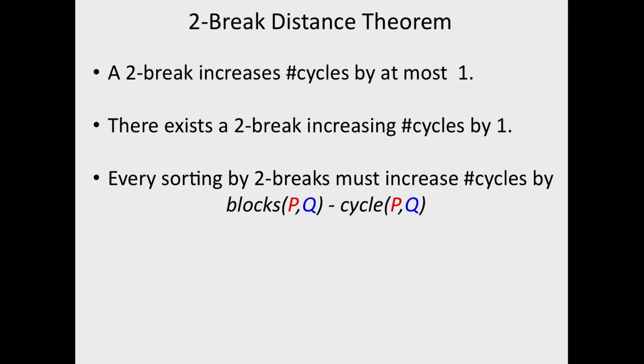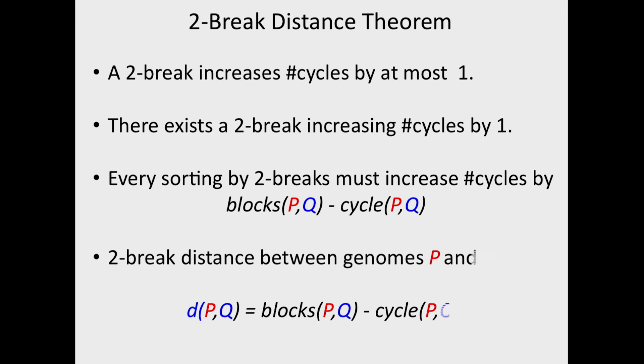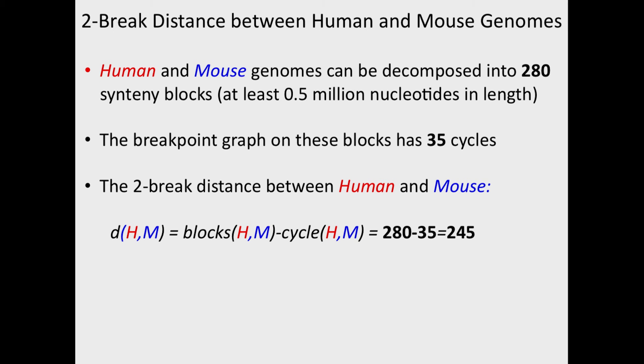We saw that every sorting by two-breaks must increase the number of cycles by number of blocks between P and Q minus number of cycles between P and Q. And therefore, the two-break distance between genomes P and Q is simply number of blocks between P and Q minus number of cycles between P and Q.